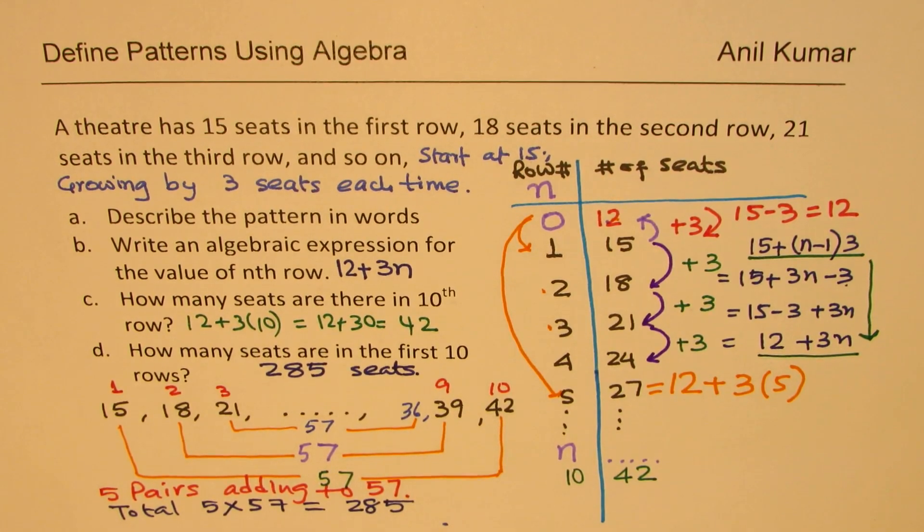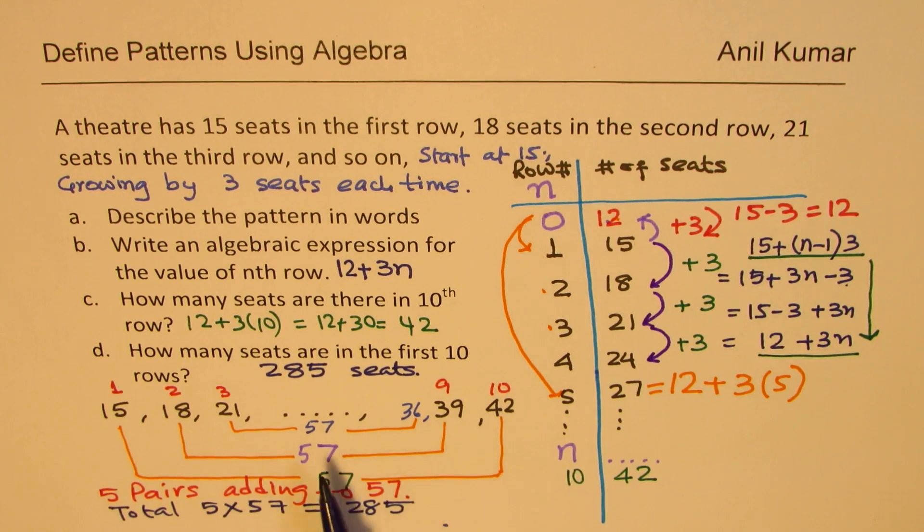Does it make sense? So try to understand. There are 10 rows and if I add first and last, I get 57. Second and second last, 57. Third and third last, 57. Fourth and fourth last, 57. And the middle too, again, give us 57. Since there are 10 rows, there'll be 5 pairs, all adding to 57. So 5 times 57, 285 will be the total number of seats. Does it make sense? So that is how we are going to actually solve this particular question.